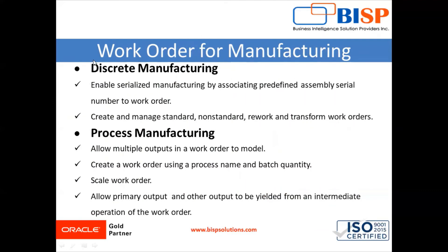As a production supervisor, you can use the Manage Work Order page to efficiently create and manage your discrete manufacturing work orders and your process manufacturing work orders. The Manage Work Order page is designed for easy navigation and capturing minimal mandatory information to quickly create and update work orders. It also allows you to create and mass update work orders. For discrete manufacturing, you can do serialized or lot-controlled manufacturing by associating predefined assembly serial numbers to the work order. You can create and manage all different types of work orders: standard, non-standard, rework, and transform.